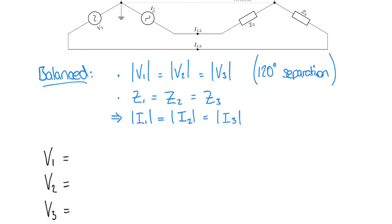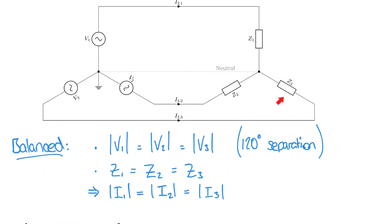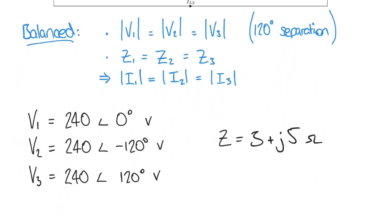These voltages are represented by the following values: 240 volts at an angle of zero degrees, 240 volts at an angle of minus 120 degrees, and 240 volts at an angle of plus 120 degrees. So we have agreed with our first assumption — three voltages, all of equal magnitude, all separated by a phase angle of 120 degrees. We also have an impedance Z equals 3 plus J5 ohms, and each of our load impedances Z1, Z2, and Z3 are all equal to this value.